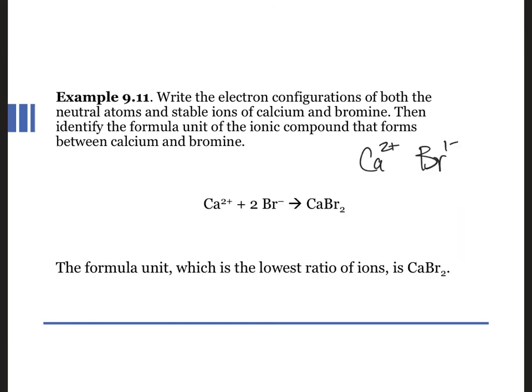Putting these two ions together, we can use the drop signs cross charges approach to get the formula for a neutral ionic compound, CaBr2.